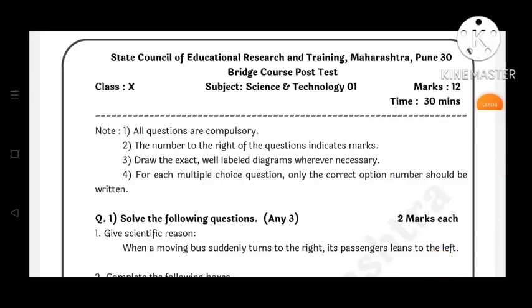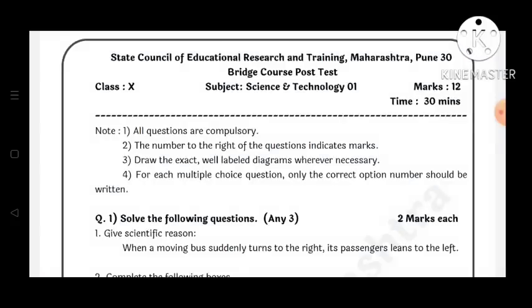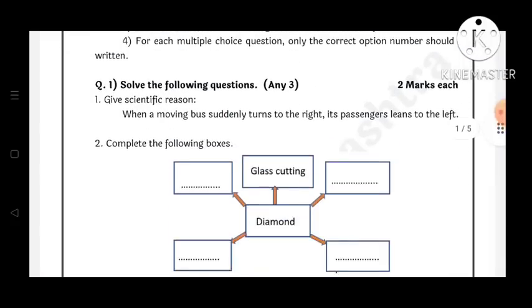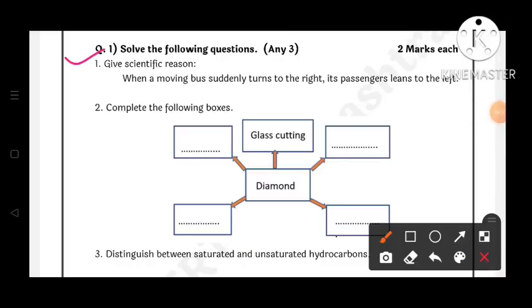Hi friends, in this video today we are going to solve Bridge Course Post-Test Class 10, subject Science and Technology Part 1. Total marks is 12. So friends, if you haven't subscribed to the channel, please subscribe, like it and share it. So let's start the test.